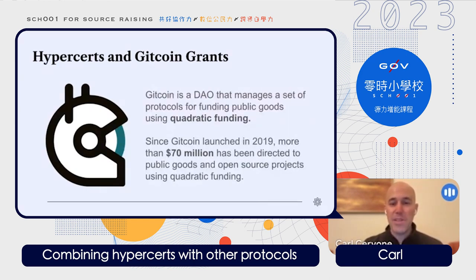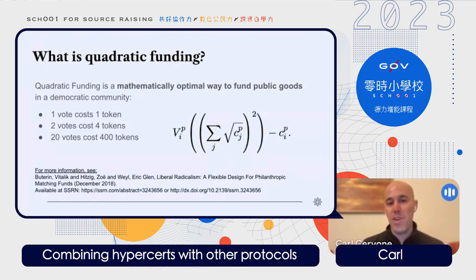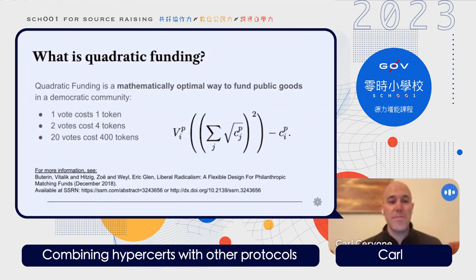What is Quadratic Funding? It is a way of allocating funding across a community by taking the square root of what everybody is contributing. In a normal system, one vote has a weight of one. But in a quadratic system, you take the square root. So if you want to assert 20 votes in favor of a public good you support, you would need to spend 400 tokens to do that.